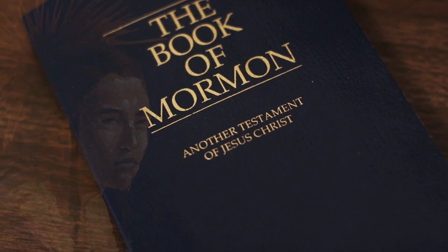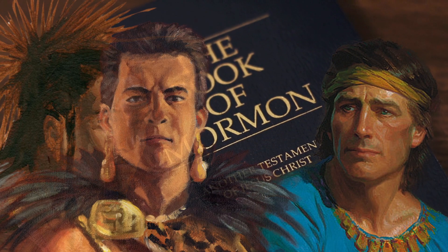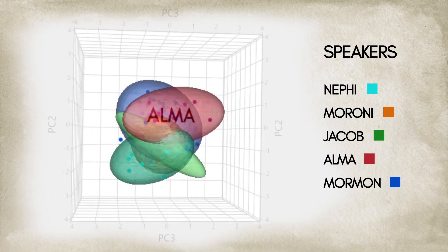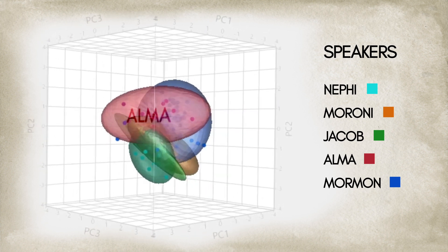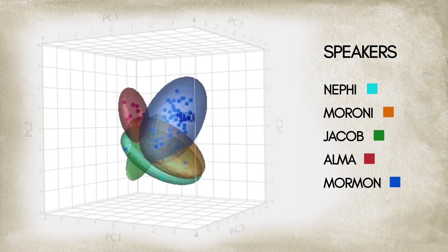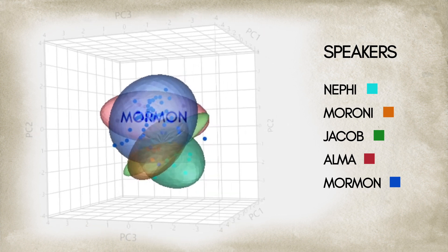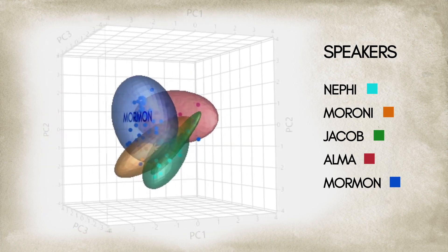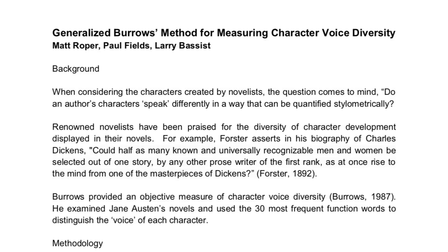To date, stylometric studies on the Book of Mormon have repeatedly demonstrated that it has multiple distinct writing styles, and that those styles are consistent with the authors designated within the text itself. For example, the colored clouds in this graph show how the writings of major Book of Mormon authors form distinct clusters based on their vocabulary and on how frequently they used certain words. One may naturally wonder, though, if the Book of Mormon's diversity of style is in some way unique or impressive.